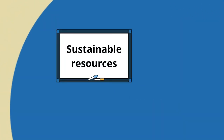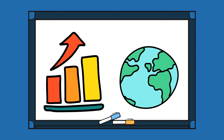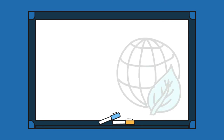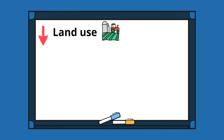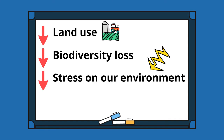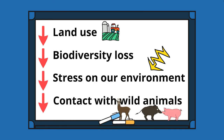We face a growing population and need for resources on the one hand, but want to safeguard biodiversity and our environment on the other. The use of sustainable resources could reduce land use, biodiversity loss, stress on our environment, and our contact with wild and disease-bearing animals.